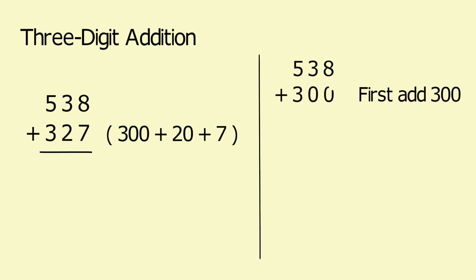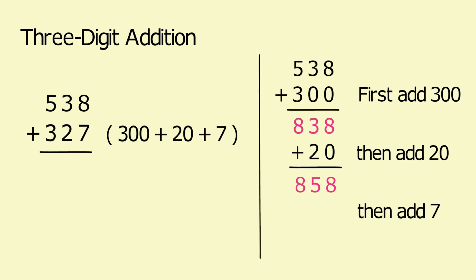Hence we can write 538, then we will first add 300 to it, so we got 838. After adding 300, we will add 20 to 838 which gives us 858. Then we have made the problem simpler. You will just have to do 858 plus 7 which gives us 865.